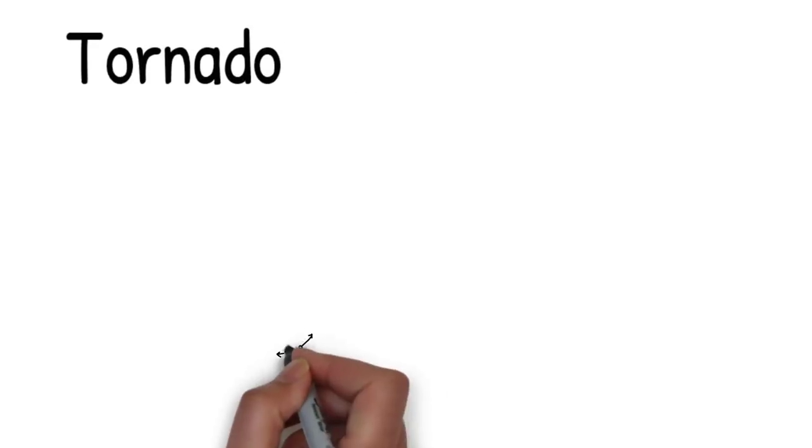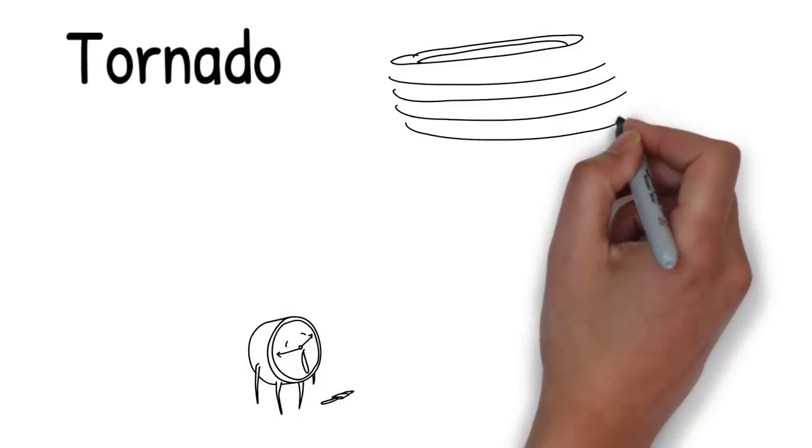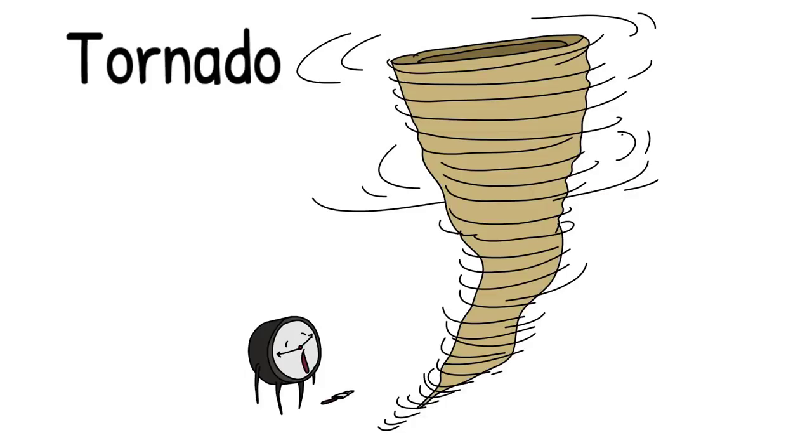Unfortunately, the clock is a terrible artist and instead of painting a rainbow, it paints a whirling tornado instead. The tornado is spinning round and round on the spot.